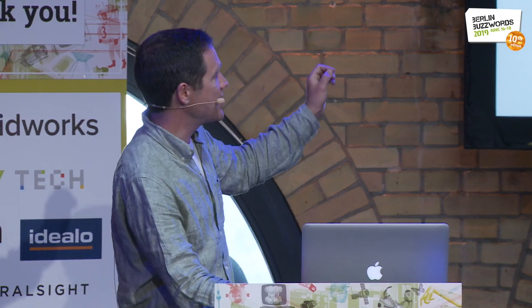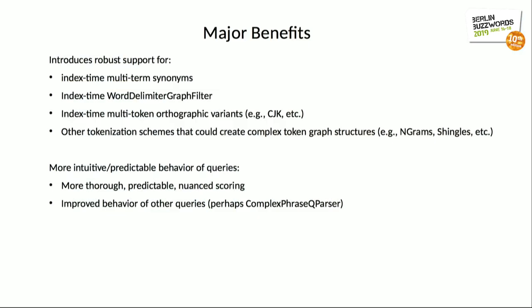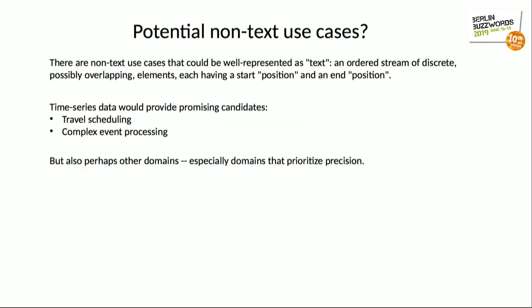I'm particularly interested in CJK indexing, anything with multi-token orthographic variants, and word delimiter graph filter. This also opens up the possibility for creative uses of n-grams and shingles that would behave more predictably, as well as more nuanced scoring. There are also potential non-text use cases — anything representable as an ordered stream of discrete, possibly overlapping elements each having a start and end position. An obvious case would be time series data like travel scheduling, where individual trips could be represented as tokens. Somebody should try that.